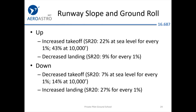What about slope? Going downhill is obviously a lot easier than going uphill for takeoff, and stopping while going uphill is a lot easier for landing. From the Cirrus book, every one degree of slope increases your takeoff run by 22% at sea level, and gives you a 9% reduction in landing distance.